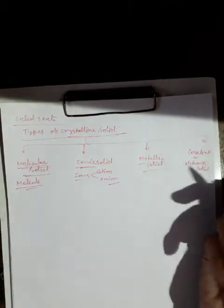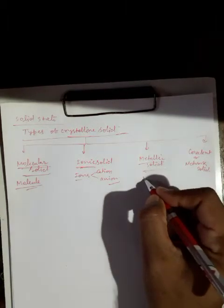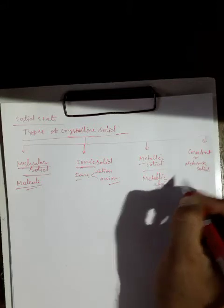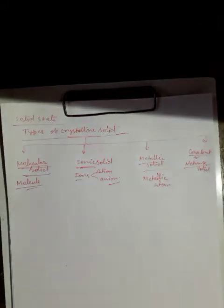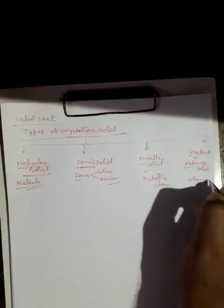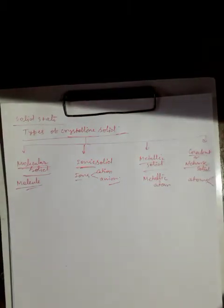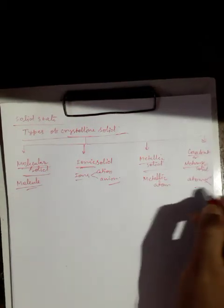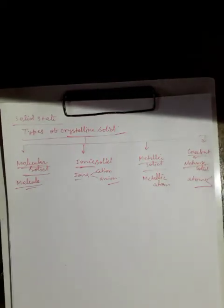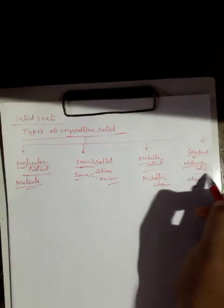Metallic solid has metallic atoms as its constituent particles. Covalent solid, that is network solid, has atoms — usually non-metallic atoms — as its constituent particles. It is extended in a three-dimensional shape, which is why it is also known as network solid.